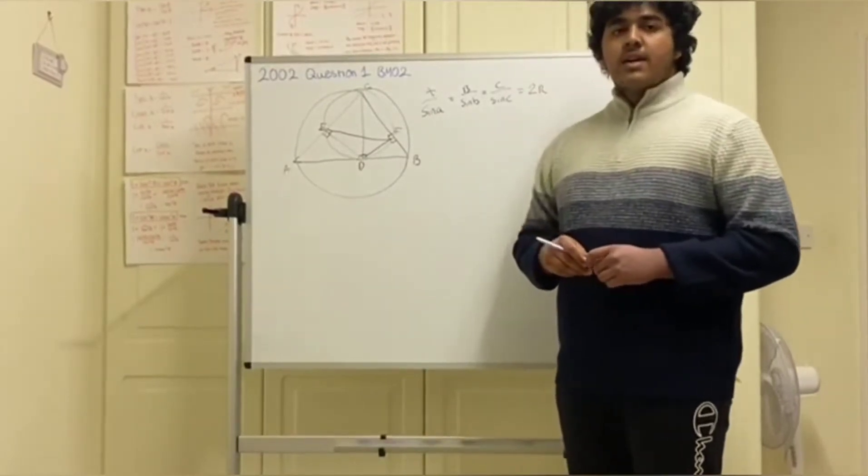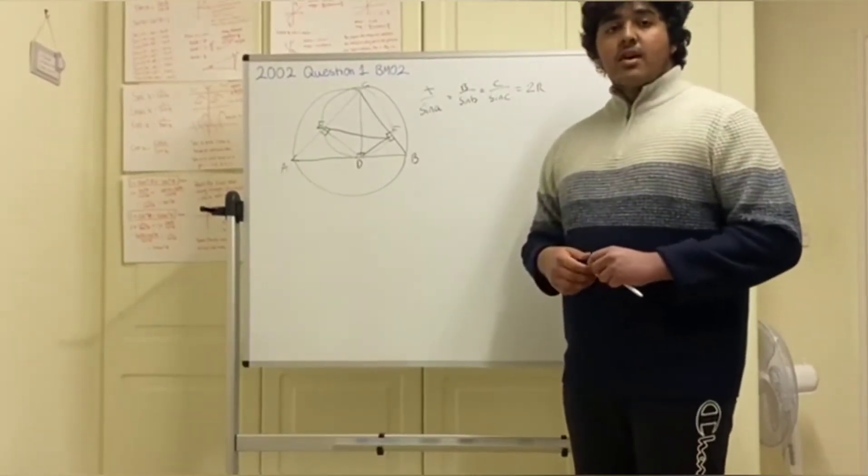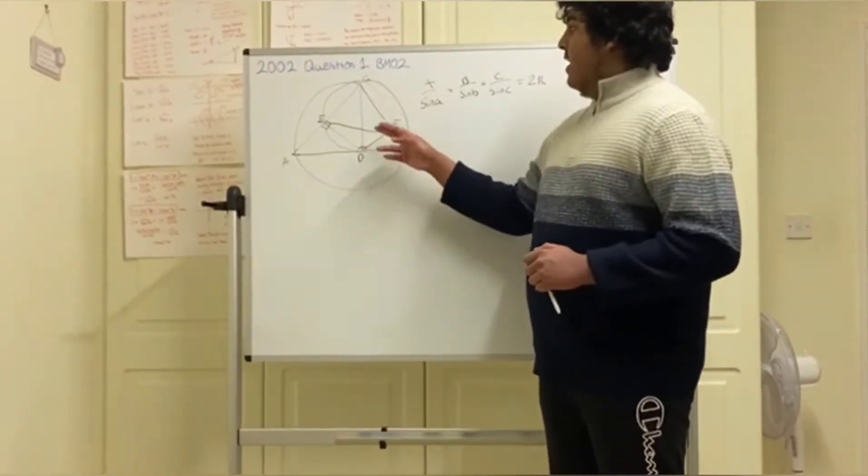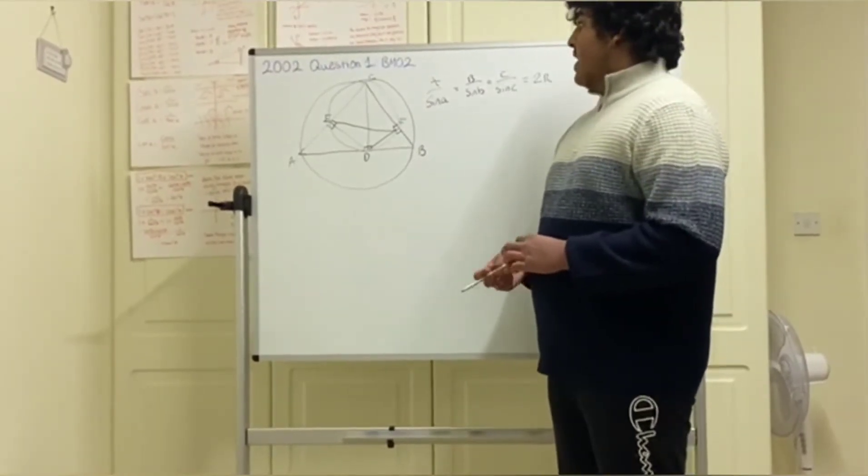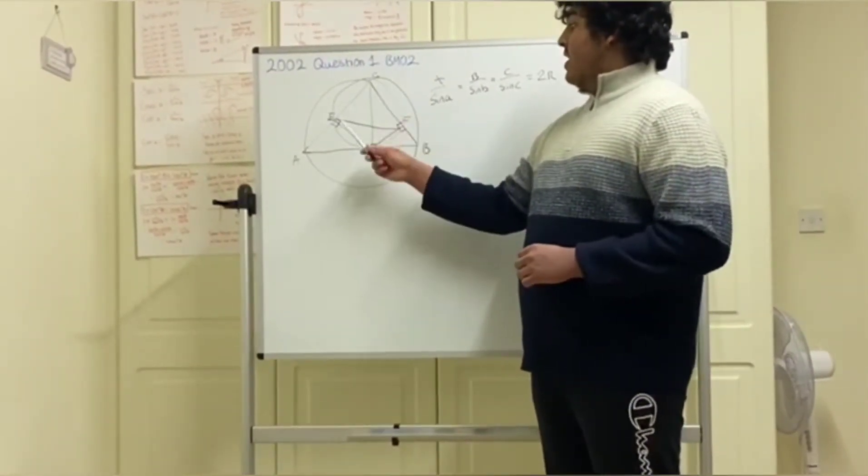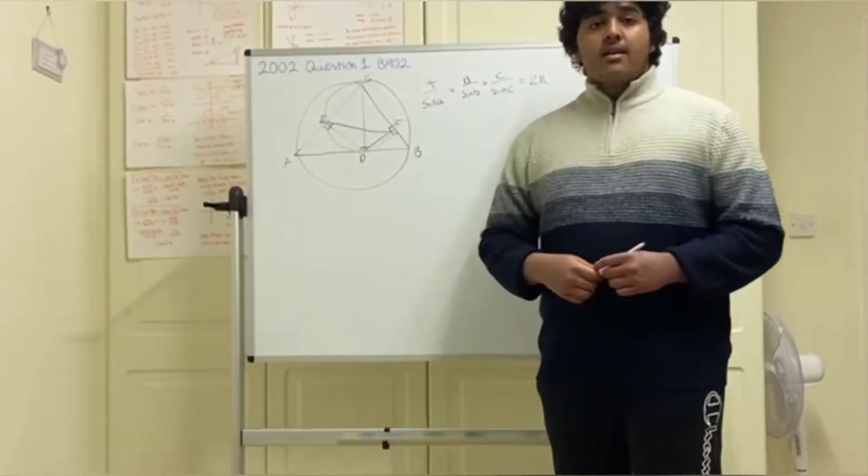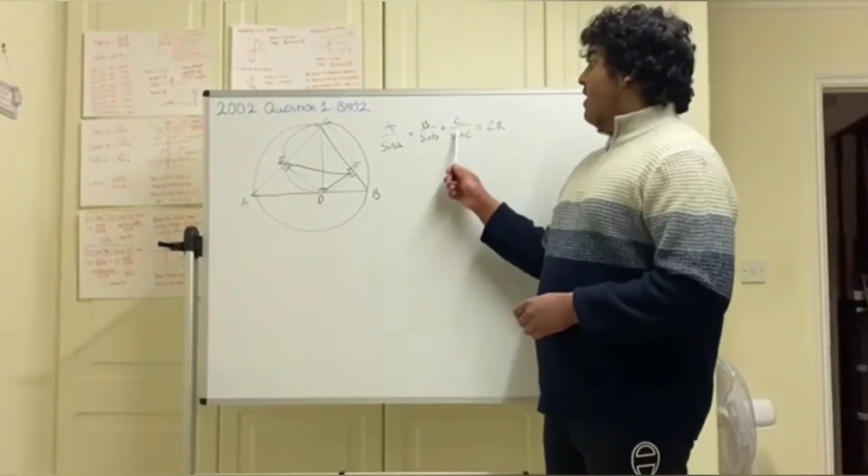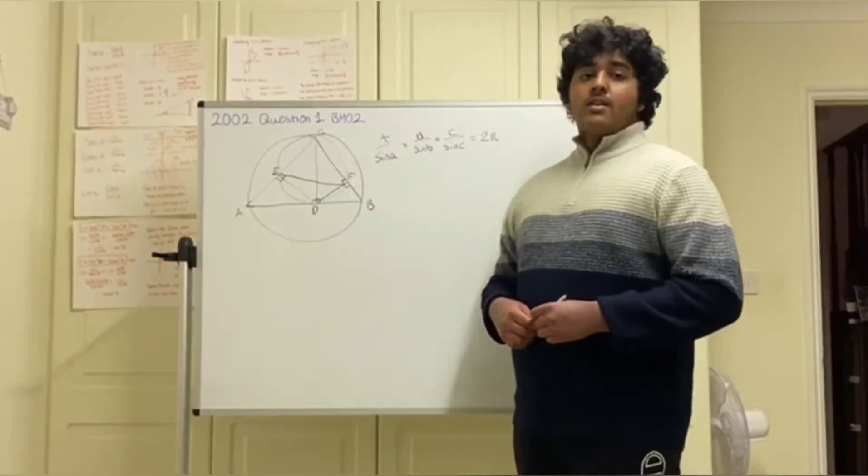The reason for this is because just a few moments ago, we ruled out Thales' 90 degrees in a semicircle. But as we can see, CED and CFD are both right angle triangles, which would mean that the circle CEDF has a diameter of CD. Now you may think that's not very useful, but since we have our identity here of the extended sine rule, this can be very useful indeed.